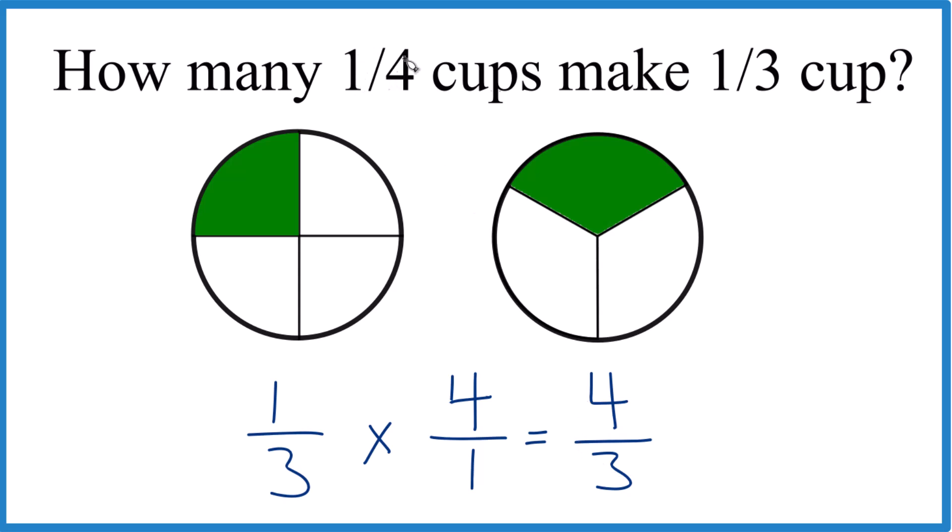So one-fourth cup, we need four-thirds of a one-fourth cup to make one-third cup. Let's change it to a mixed number.